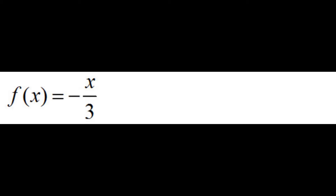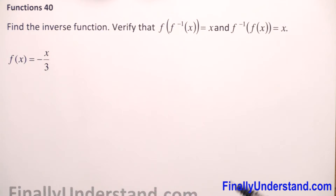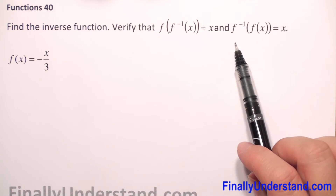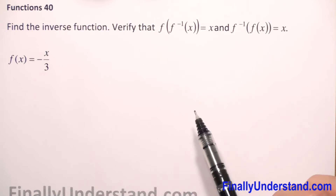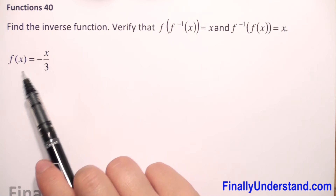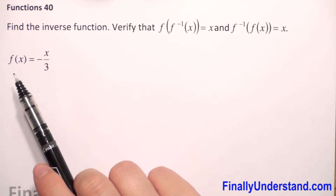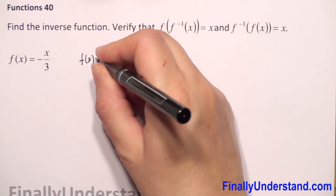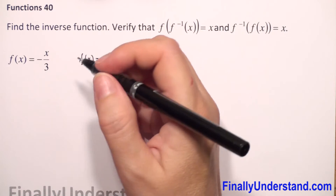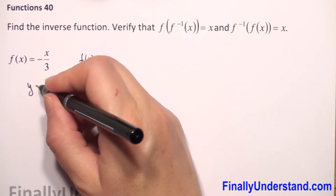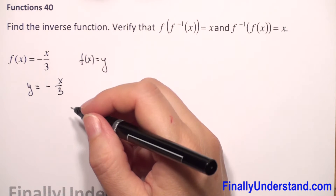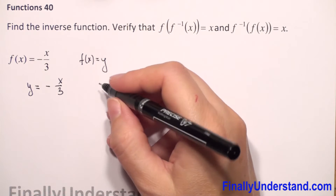Find the inverse function and verify that the composition f of f-inverse equals x, and f-inverse of f equals x. We have a given function f. First, we will replace f of x by y. So we have that y is equal to negative x over 3. Next, we will interchange x and y.